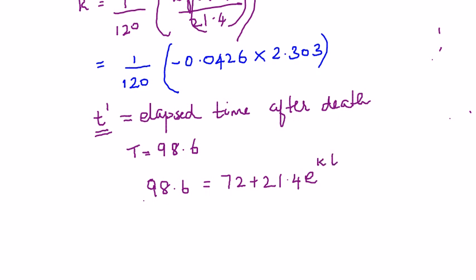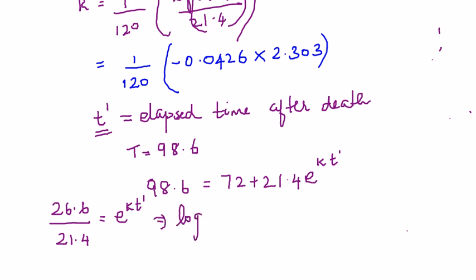Substituting T = 98.6 into the equation: 98.6 - 72 = 26.6 = 21.4·e^(k·t-dash). Dividing both sides by 21.4: 26.6/21.4 = e^(k·t-dash). Taking log on both sides: log(26.6/21.4) = k·t-dash.